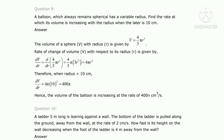Differentiating with respect to r: dV/dr = (4/3)π · 3r² = 4πr². When the radius is 10 cm: dV/dr = 4π × (10)² = 400π. Hence, the volume of the balloon is increasing at the rate of 400π cm³ per centimeter when the radius is 10 cm.